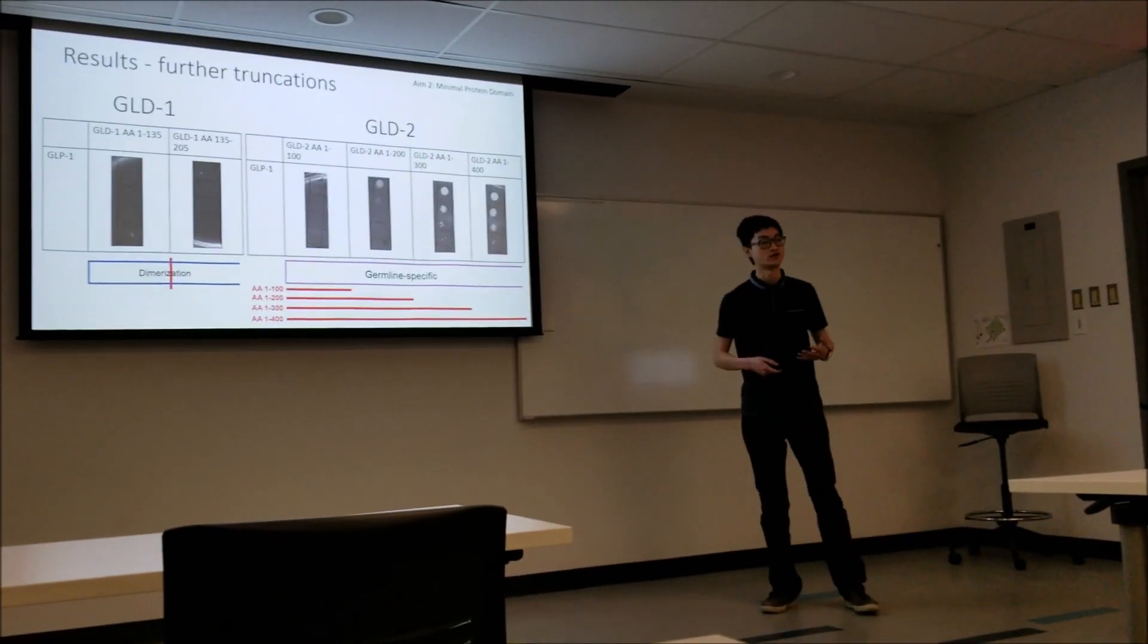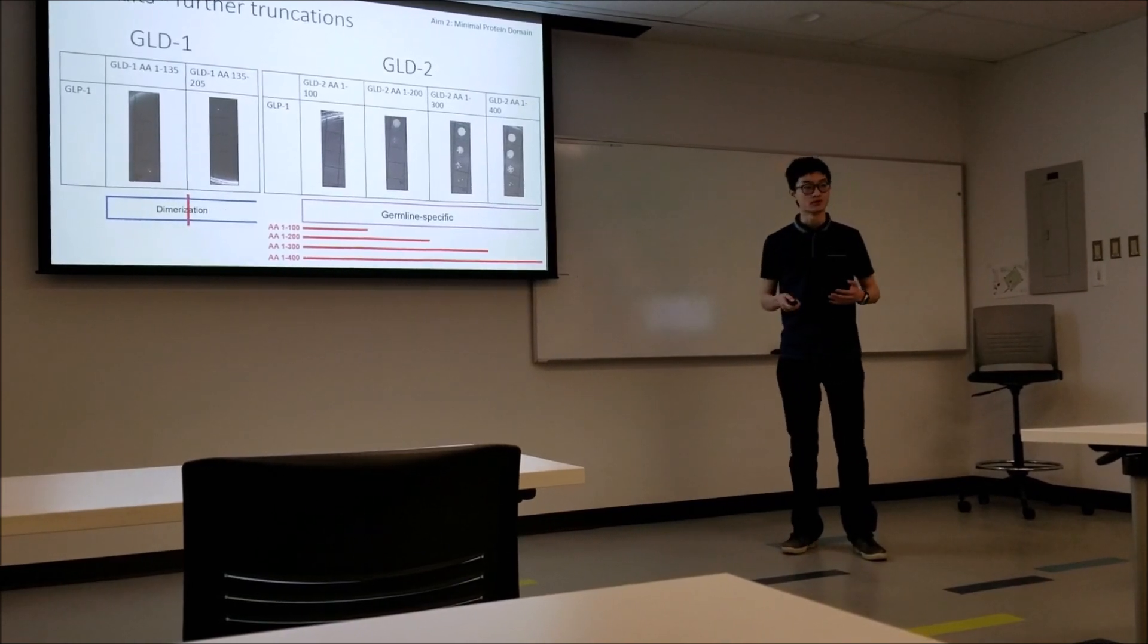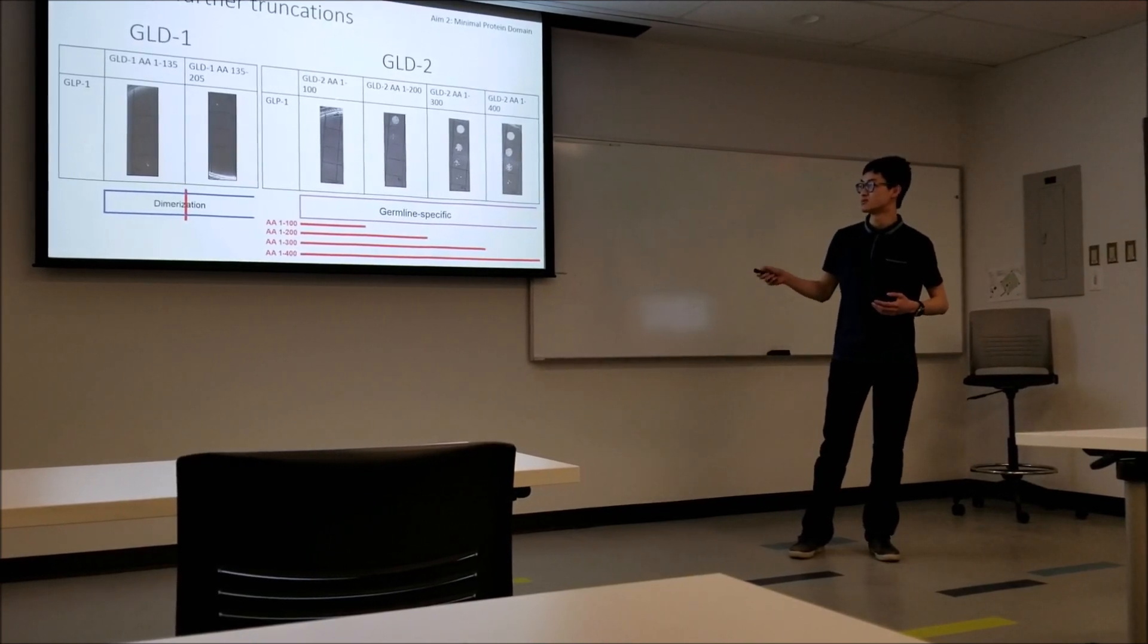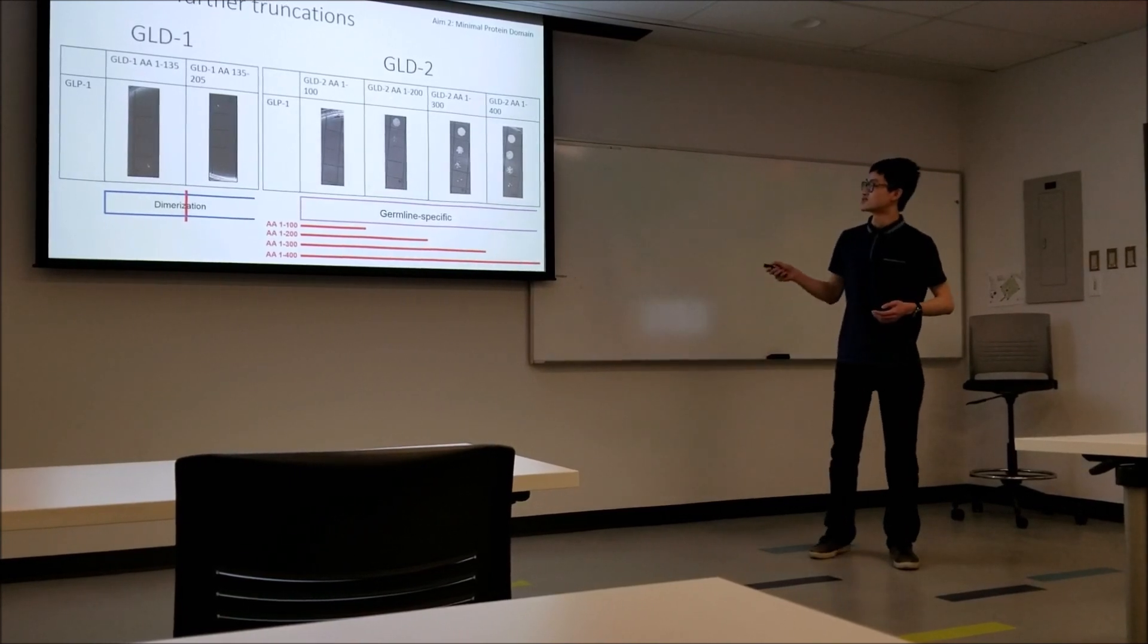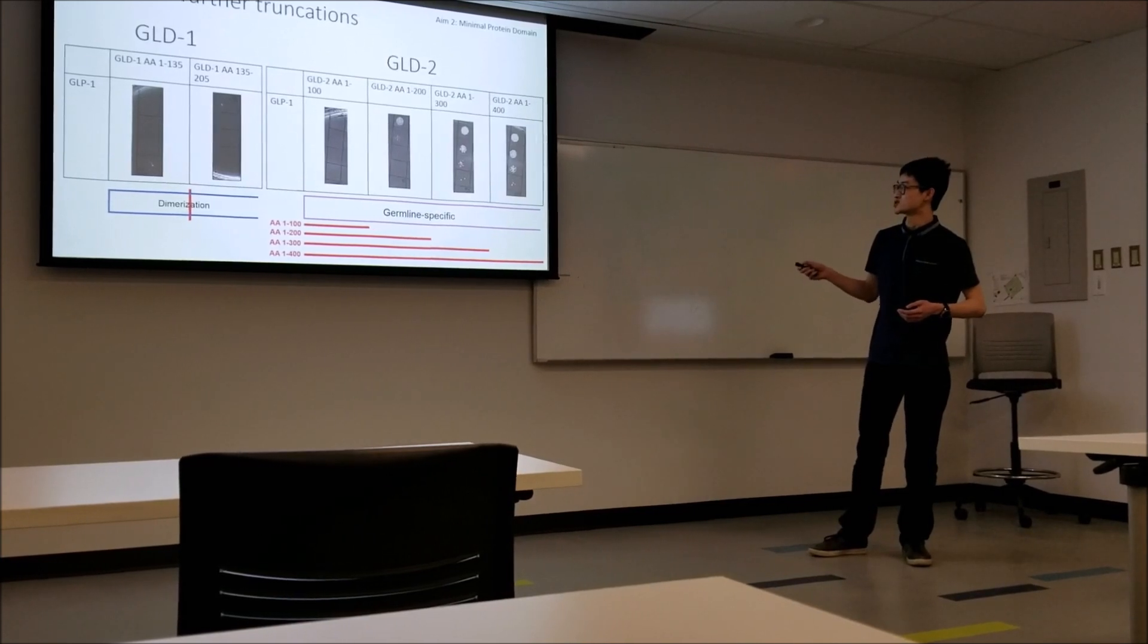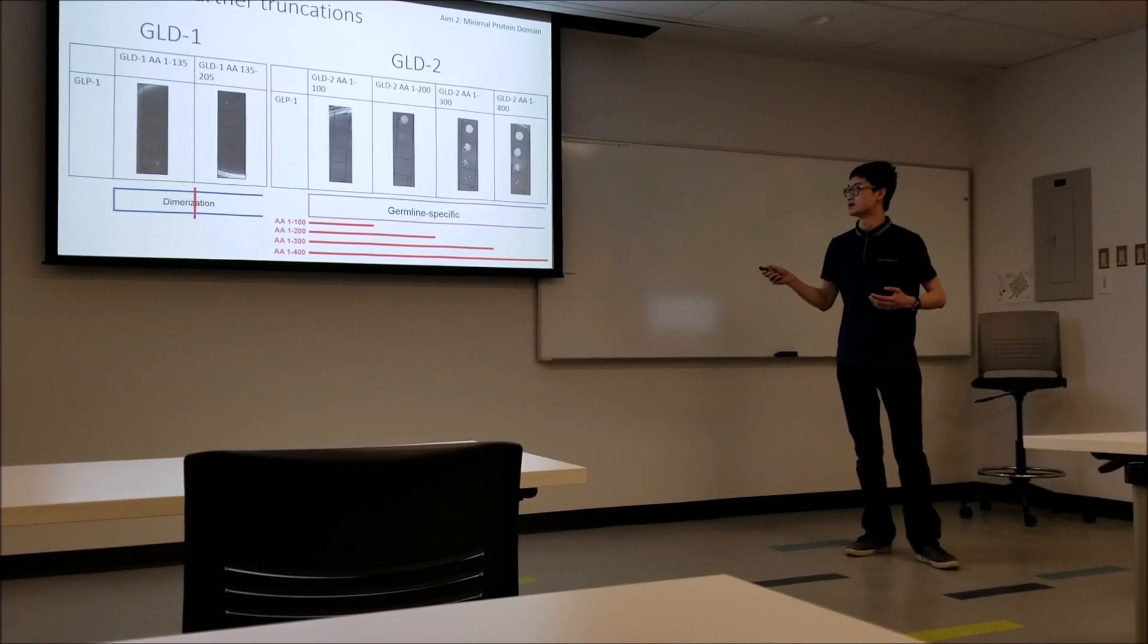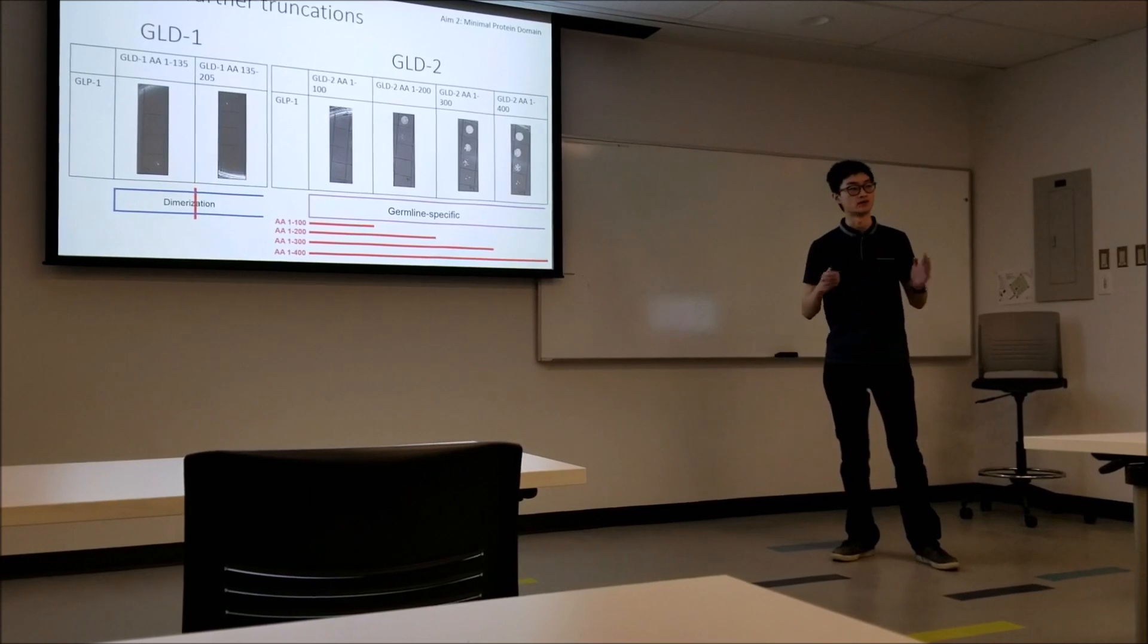For GLD2, it's a little bit more interesting. Of all those overlapping truncations, these four are the most interesting. Just taking the first 100 amino acids doesn't seem like there's any interaction. For the first 200, it looks like we have maybe something happening. For the first 300, we see some interaction, and for the first 400, again we have that interaction. So it seems like at this time we're able to narrow it down right to 1 to 300.